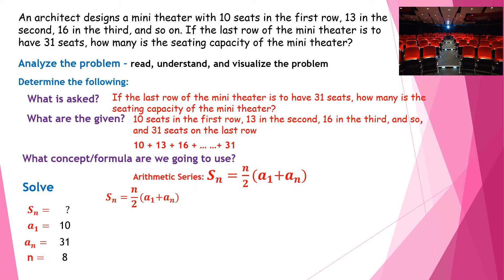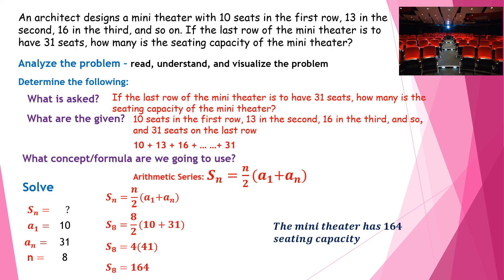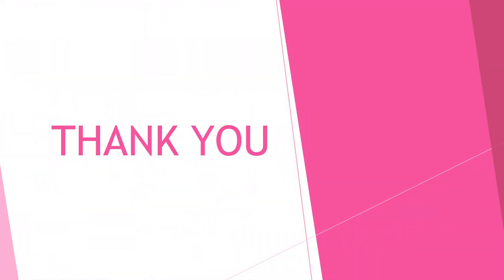Substituting into the formula, s sub 8 equals 8 over 2 times 10 plus 31, which gives 4 times 41, so s sub 8 equals 164. Therefore, the mini theater has a seating capacity of 164. That's it — thank you for watching and I hope you learned something from this video.